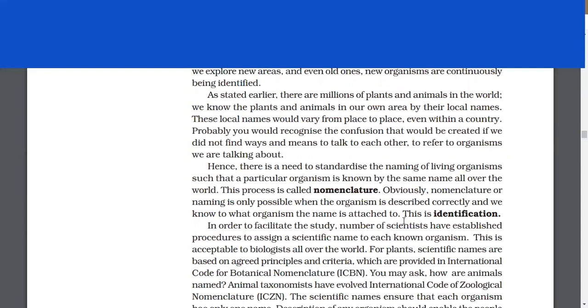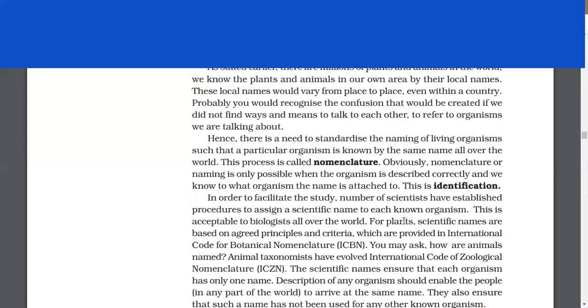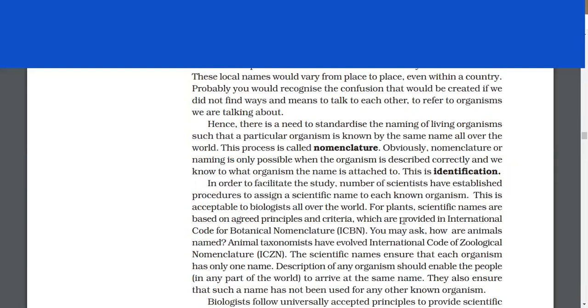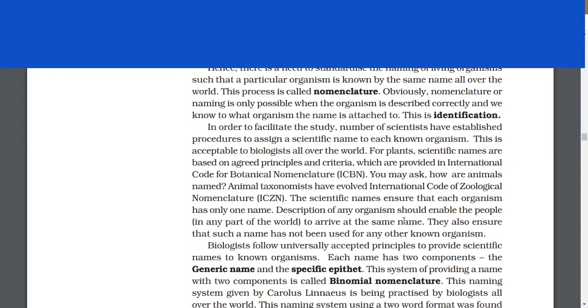Probably you would recognize the confusion that would be created if we do not find ways and means to talk to each other about organisms. Hence, there is a need to standardize the naming of living organisms such that a particular organism is known by the same name all over the world. This process is called nomenclature. Nomenclature is only possible when the organism is described correctly. This is identification.